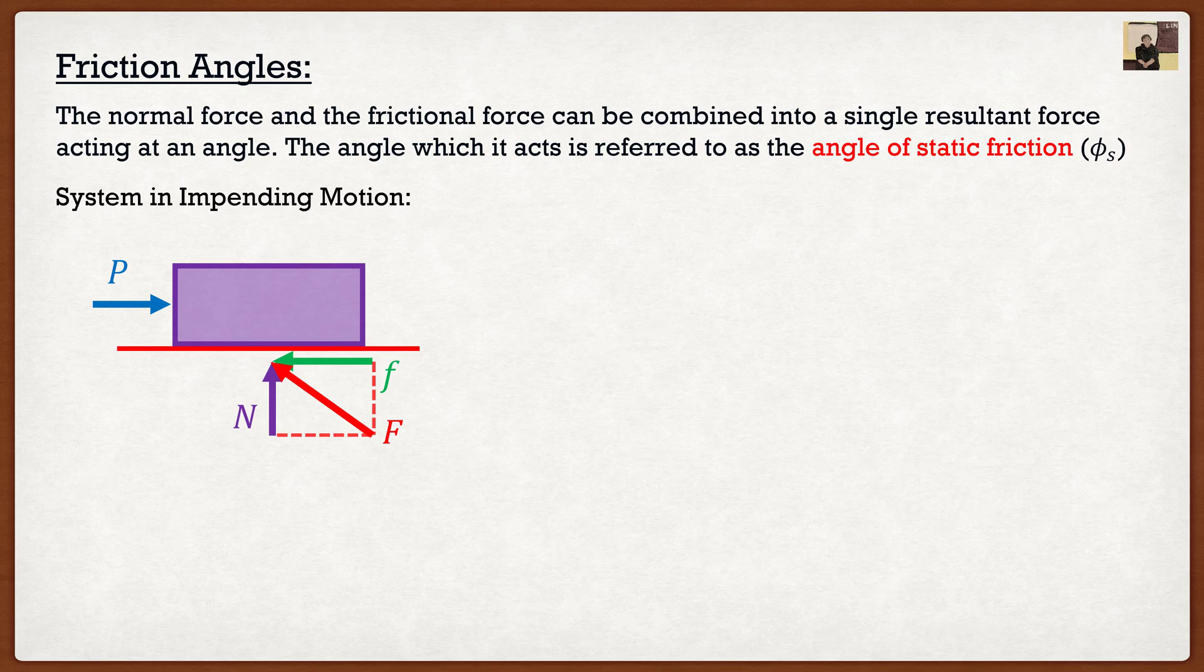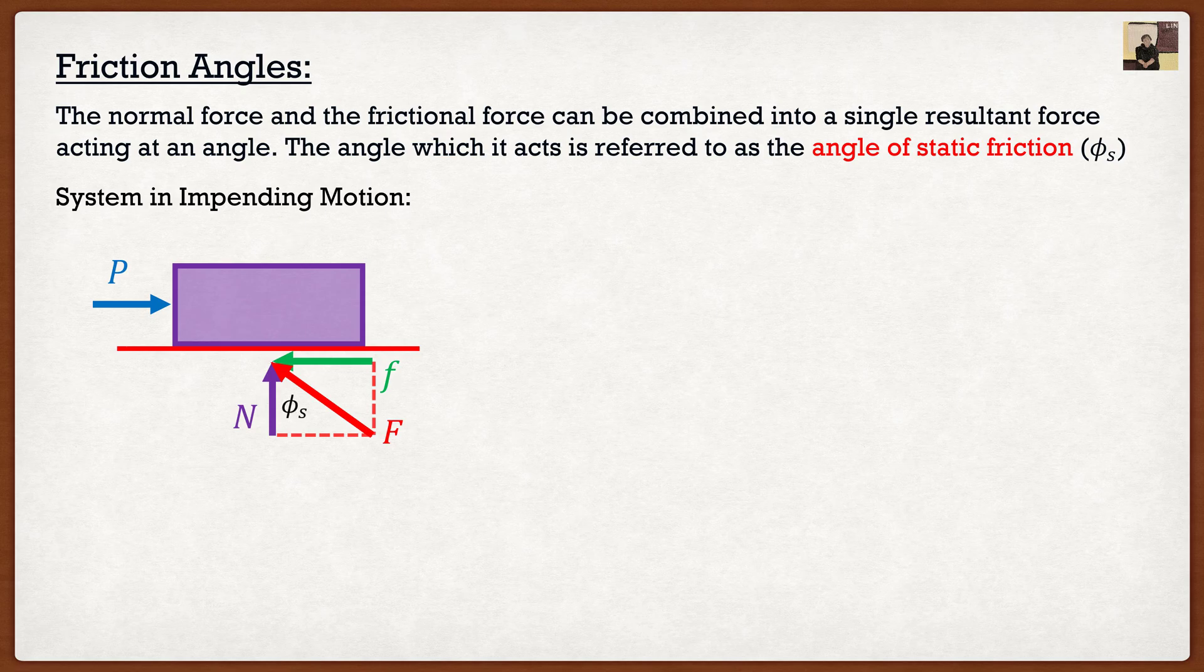Now the angle between the normal force, so the vertical direction, and that resultant force, we call that φ_s or the angle of static friction.